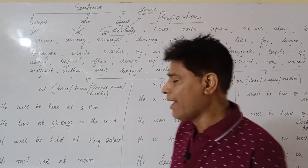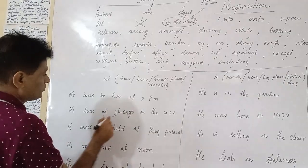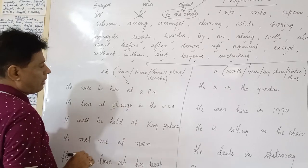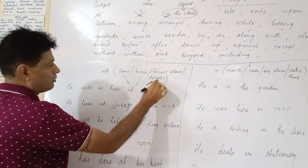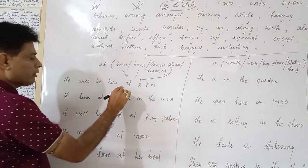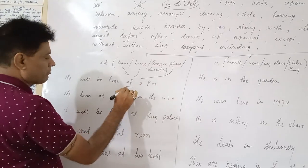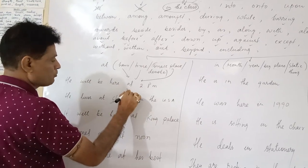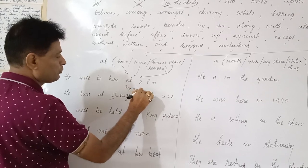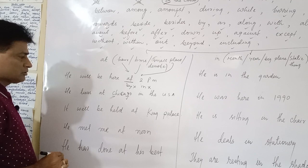Where to use at? At is used when we denote hour, we denote time, or a small place, or denoting anything. He will be here at 2 p.m., not by 2 p.m. will be incorrect. He will be here in 2 p.m. will be incorrect. At will be correct for you.